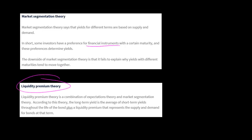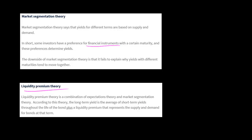Liquidity premium theory is a combination of expectation theory and market segmentation theory. It says yes, the long-term yield is the average of the short-term yields. However, there's also a liquidity premium that represents the supply and demand investors have for financial instruments — whether short-term or long-term — at any given point in time. So it agrees with expectation theory, but adds that investors might also have a preference and be willing to pay a premium for short-term or long-term instruments.